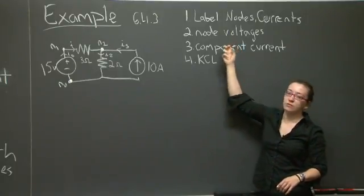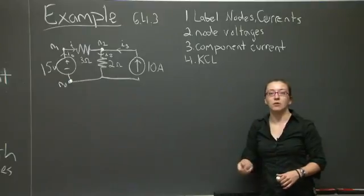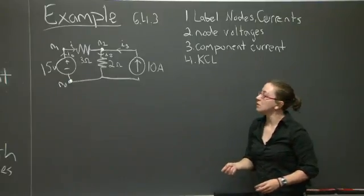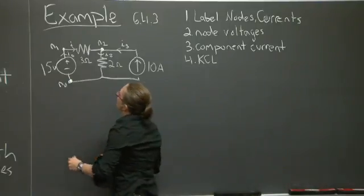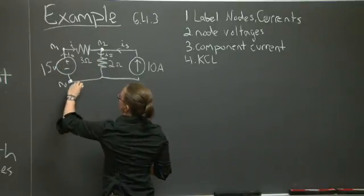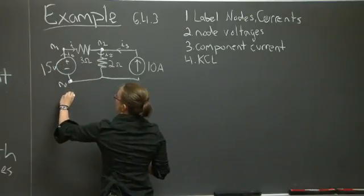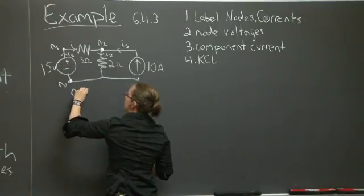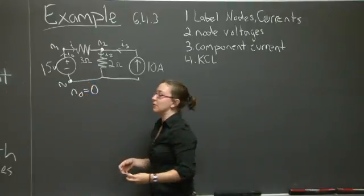Now I'm going to specify the voltage drop across a particular component in terms of the node voltages. I'm also going to assign N1 to 0 or N0 to 0 as my ground. As a consequence, I know that N1 is going to be 15 volts.